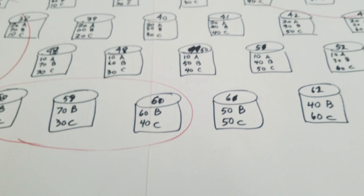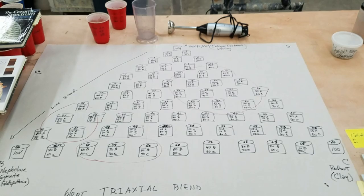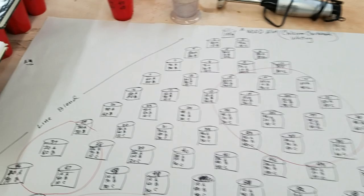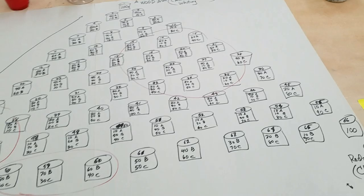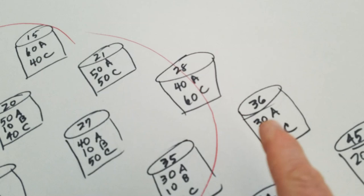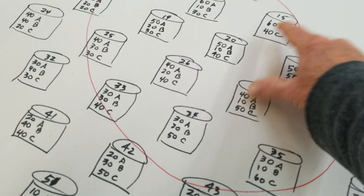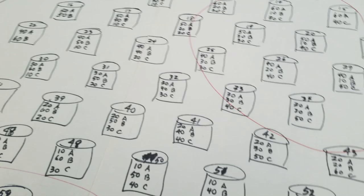Here's Robin Hopper's book, 'Ceramic Spectrum' - super good book, has it all outlined in there. Here is the 66-point grid. What it's showing you is that each leg of this triaxial is essentially a line blend of the three ingredients. You can see here we've got 90/10, 80/20, 70/30, and so on. The C leg is 40-40-40, the B leg is 30-30-30-30, and there's the A leg going across.